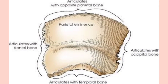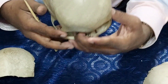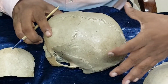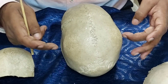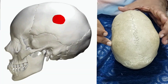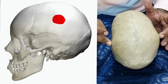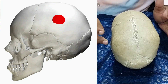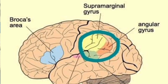The importance of the parietal prominence: number one, it acts as a useful landmark for craniometry. The parietal eminence on each side allows the maximum biparietal diameter to be measured from one eminence to the other. Number two, ossification of the parietal bone begins at this eminence. Number three, opposite to this eminence lies the supramarginal and angular gyrus of the cerebral cortex.